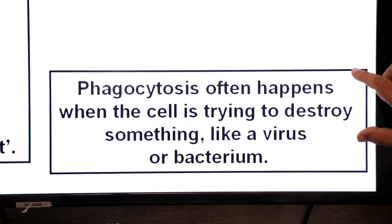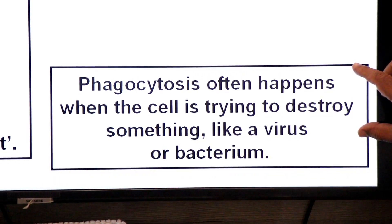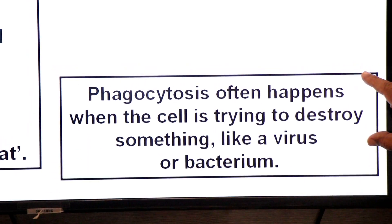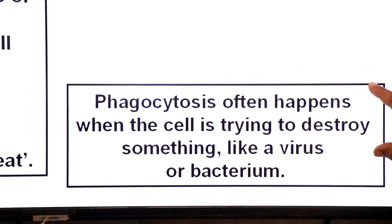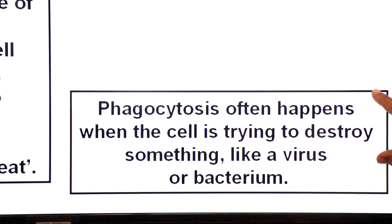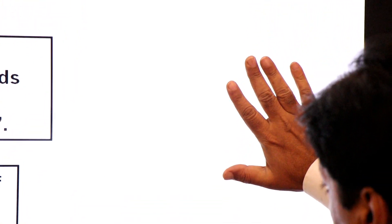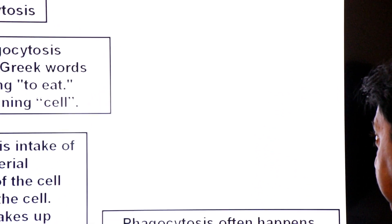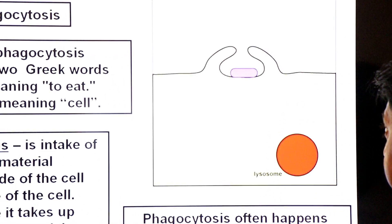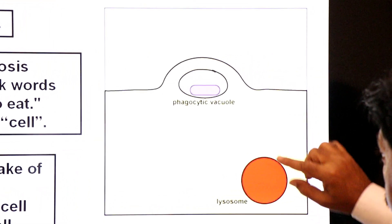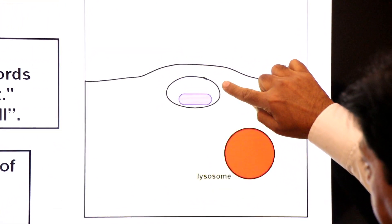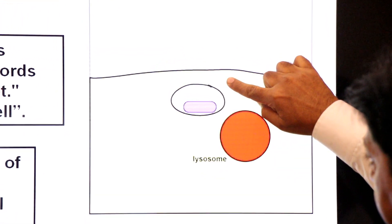Phagocytosis often happens when a cell is trying to destroy something like a virus or a bacterium. For example, a white blood cell engulfs a bacterial cell — the white blood cell's plasma membrane intakes the bacterium through phagocytosis.